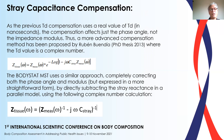Bodystat's MST device uses a similar approach, completely correcting both the phase angle and modulus, but expressed in a more straightforward form. By directly subtracting the stray reactance in a parallel model using a complex number calculation, we get a much truer representation of the stray capacitance, which we can then compensate.